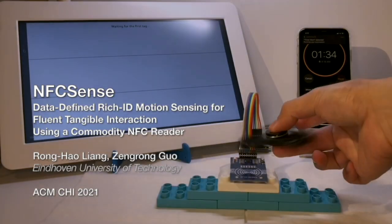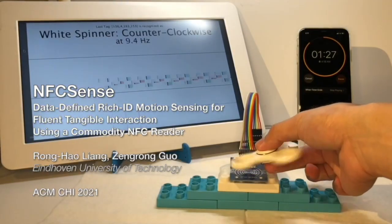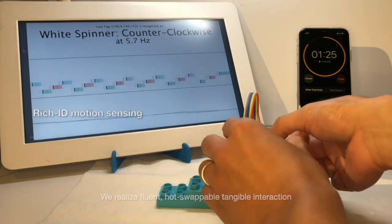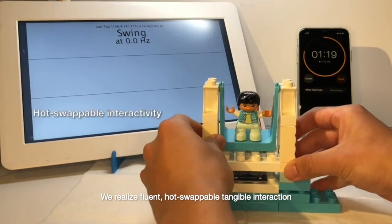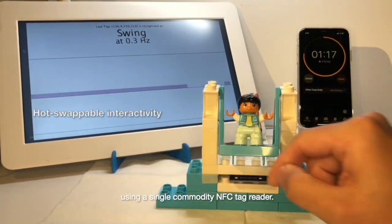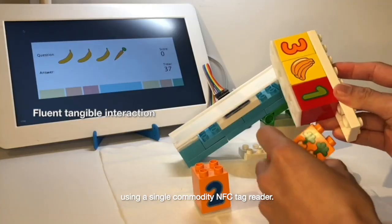We present NFC Sense, a data-defined reach ID motion sensing technique. We realize fluent, hot-swappable, tangible interaction using a single commodity NFC tag reader.